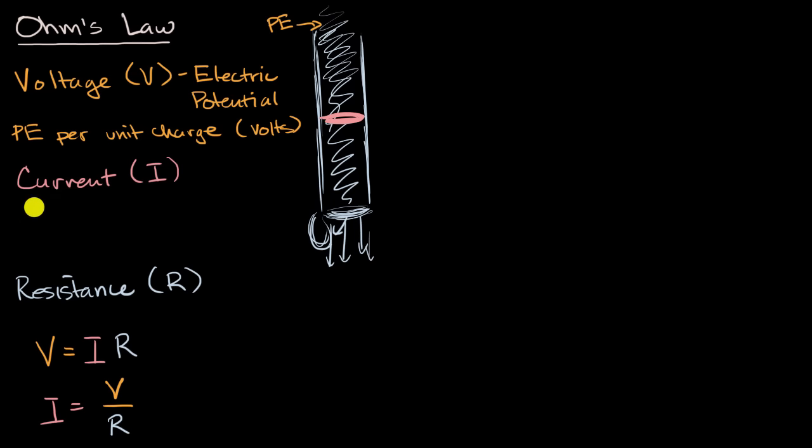Current is the amount of charge, so we could say charge per unit time. Q for charge, and T for time. And intuitively, you could say how much,